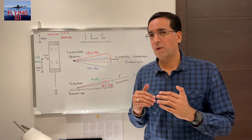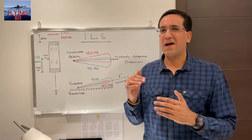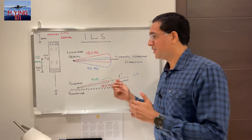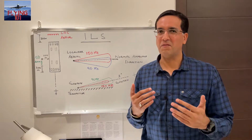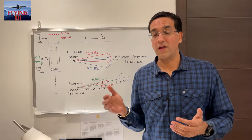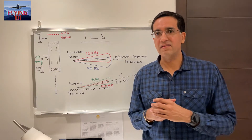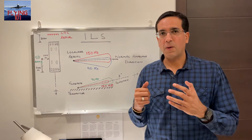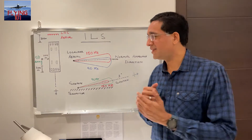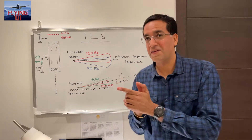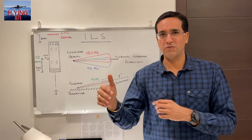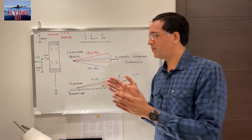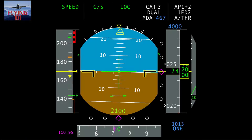ICAO — the International Civil Aviation Organization — requires glide paths to be between two degrees and four degrees; three degrees is the norm worldwide. However, there may be deviations at certain airports, dictated by obstacles and terrain on the approach path. Sometimes obstacles may call for a steeper descent angle greater than three degrees to ensure obstacle clearance, but typically three degrees is the most common.